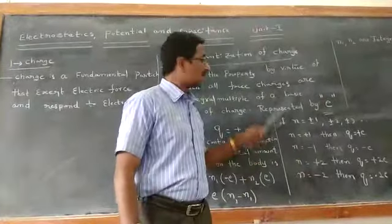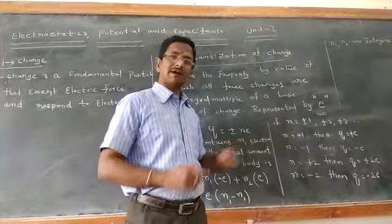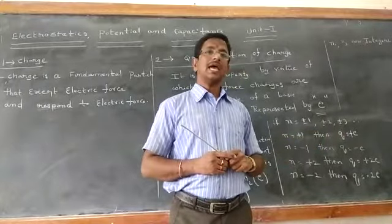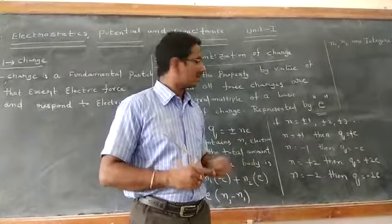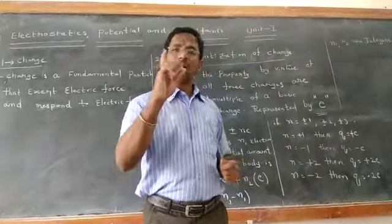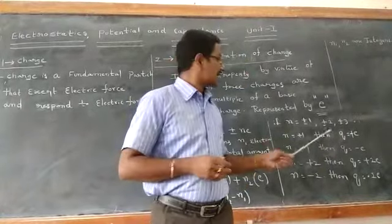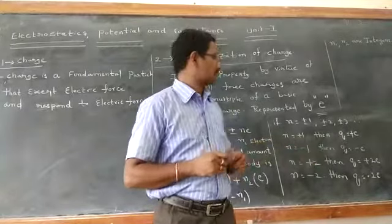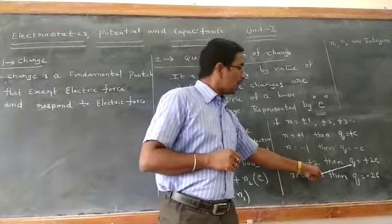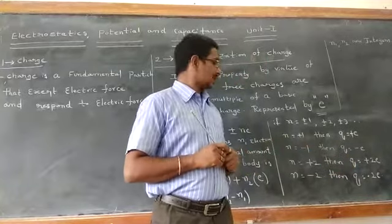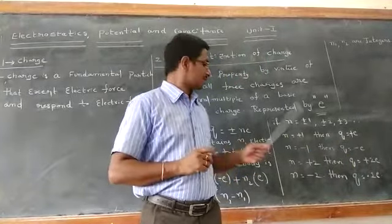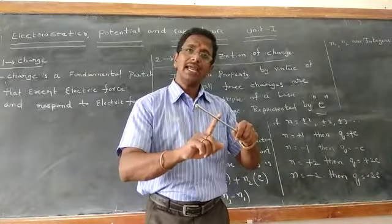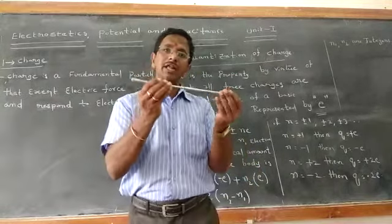If N equals +1, then charge Q equals +E, meaning the body contains 1 proton. If N equals −1, then Q equals −E, meaning the body contains 1 electron. If N equals +2, then Q equals +2E, meaning the body contains 2 protons. If N equals −2, then Q equals −2E, meaning the body contains 2 electrons and possesses a negative charge.